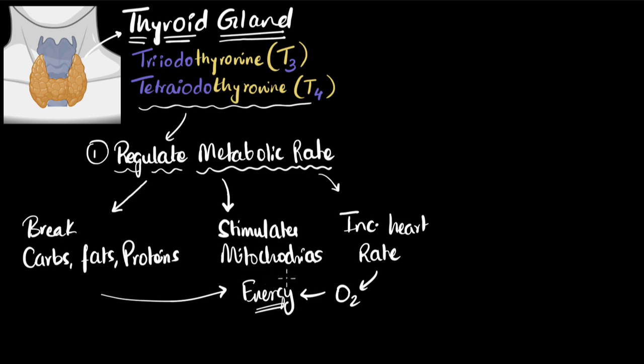All right, now imagine I have enough energy. I don't want a lot of energy anymore. What happens? Your body senses that, and it tells the thyroid gland to cool off, reduce the amount of these two hormones. And therefore, all of these activity reduces, and that's basically how you regulate your metabolic rate.